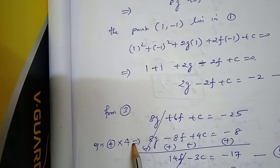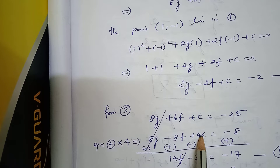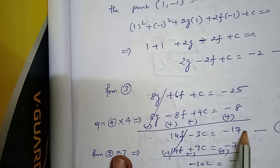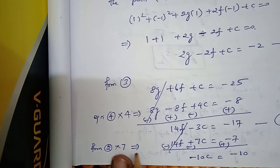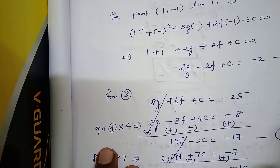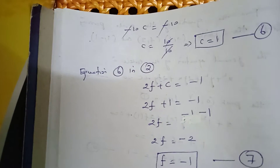From equation number 3: 8g + 6f + c = -25. Equation number 4 is multiplied by 4 to get 8g - 8f + 4c = -8. Changing the signs and subtracting gives 14f - 3c = -17, which is equation number 5. From equation number 2 multiplied by 7: 14f + 7c = -7. Changing the signs gives -10c = -10, so c = 10/10 = 1. This is equation number 6.